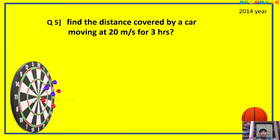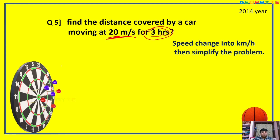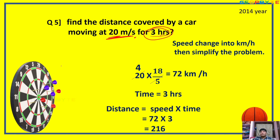Find the distance covered by a car moving at 20 meters per second for 3 hours. Here, speed is given in meter per second but time is in hours. So convert meter per second into kilometer per hour: 20 m/s into 18/5 gives 72 kilometer per hour. Now distance equals speed into time: 72 into 3. Calculation: 3 times 72 equals 216 kilometers total. This was from the 2014 entrance examination.